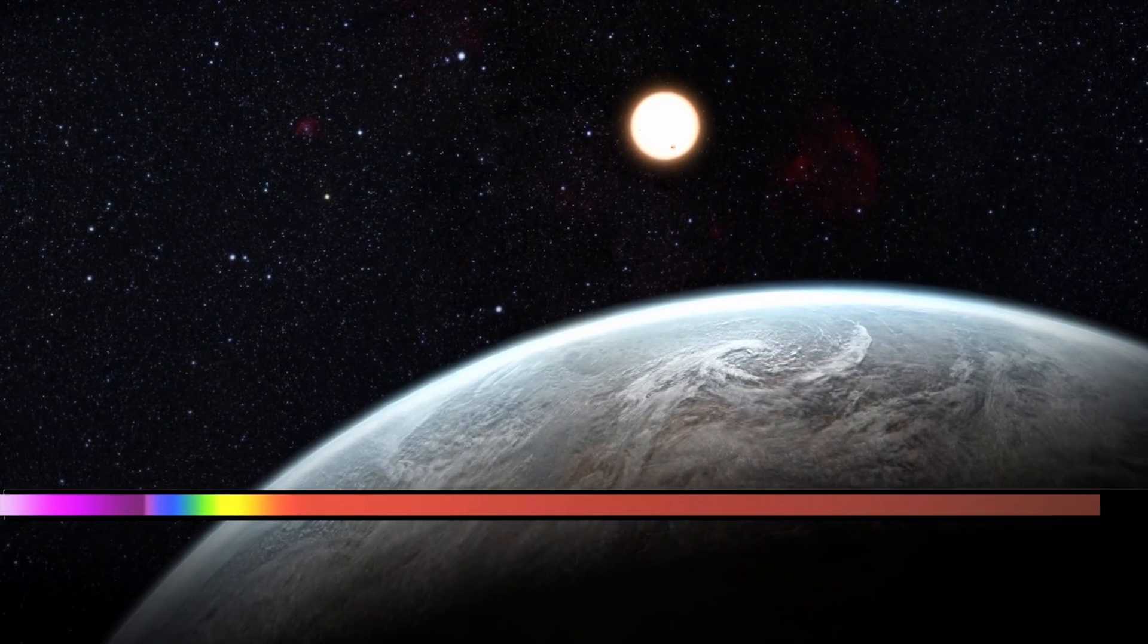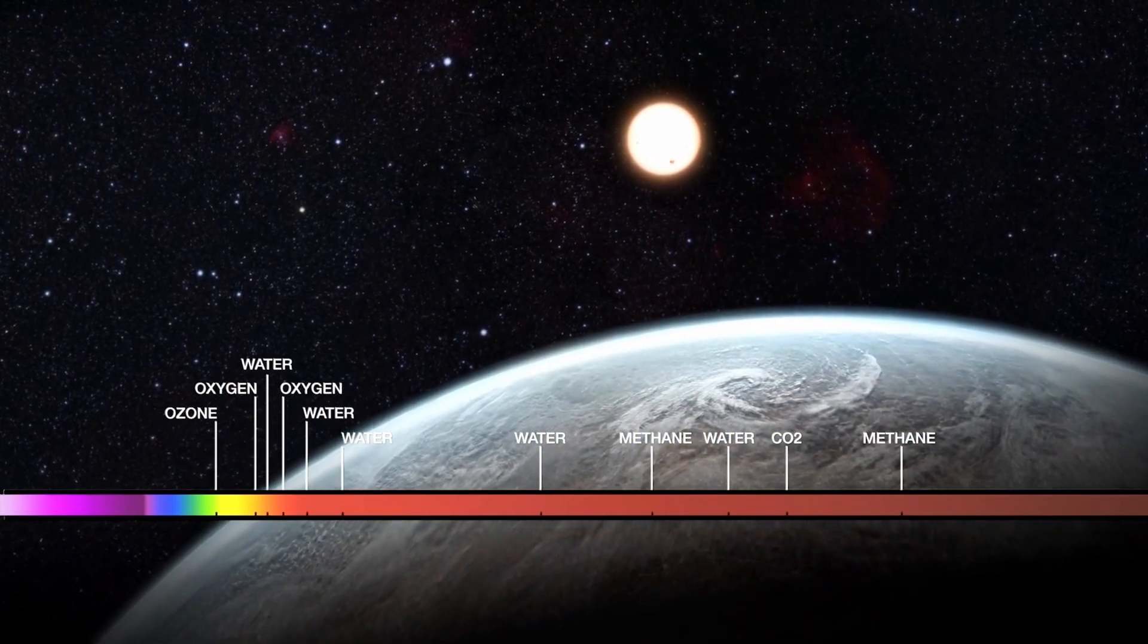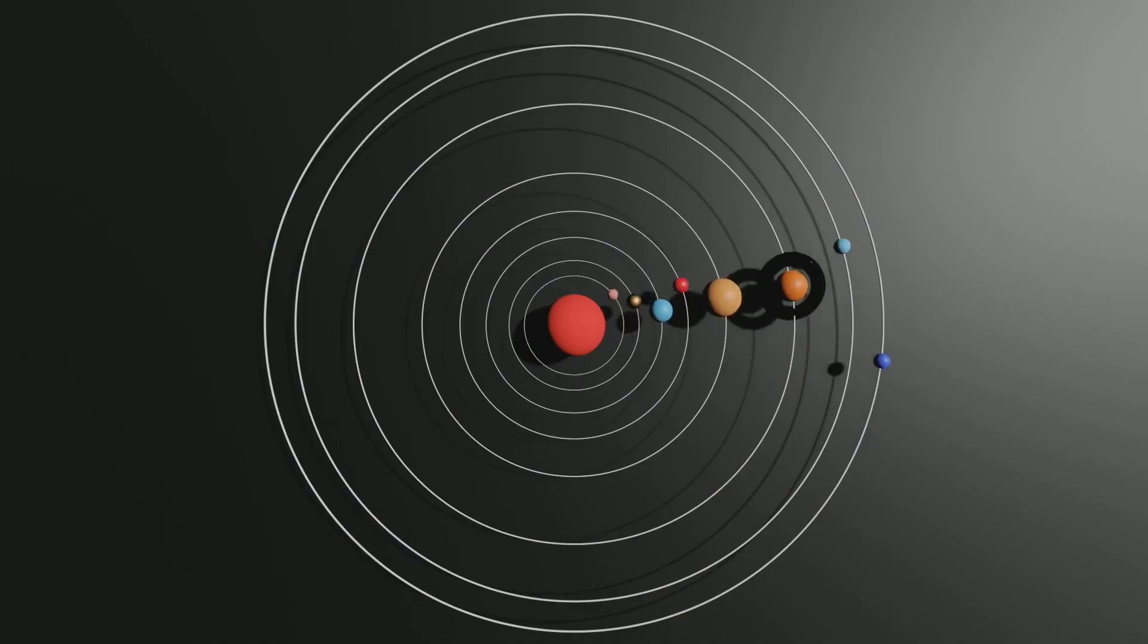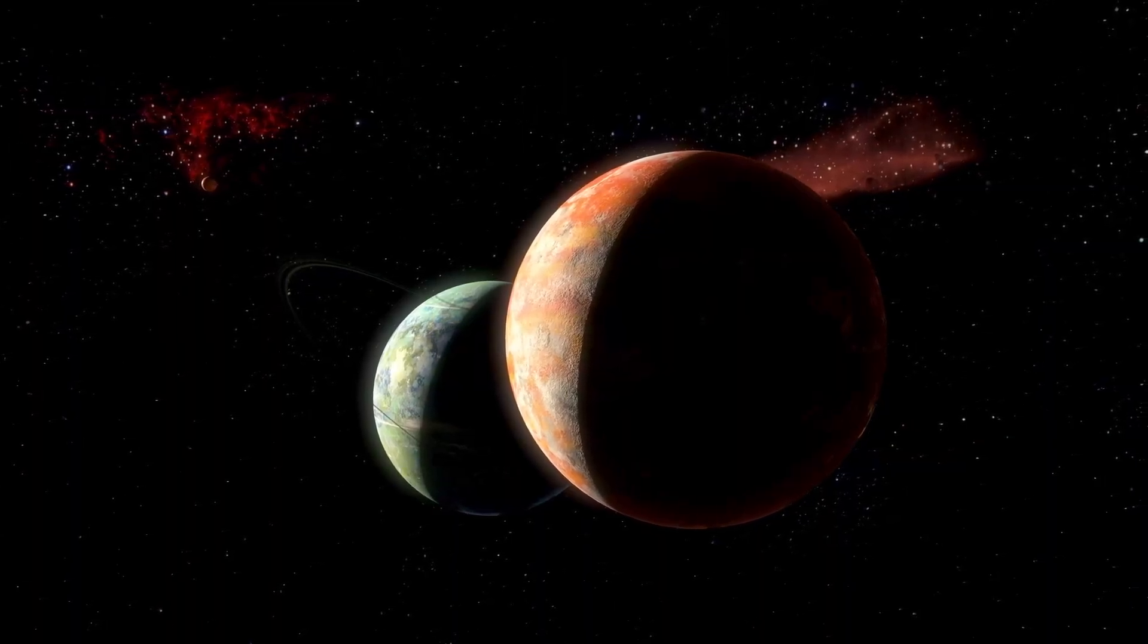Now, here's the exciting part. Proxima b sits in what's called the habitable zone. That's the not-too-hot, not-too-cold area around a star where liquid water could exist. And let's be real, if you're looking for life, water is usually step one.